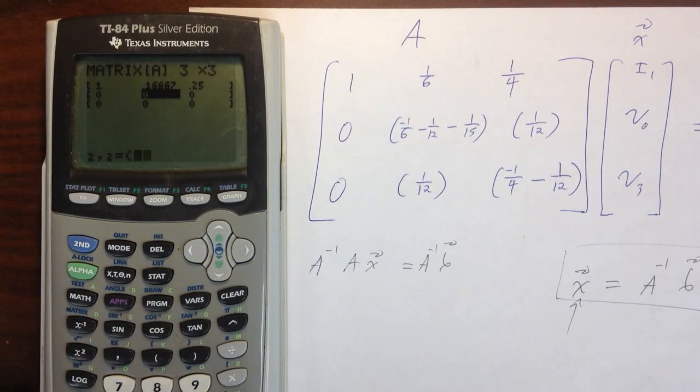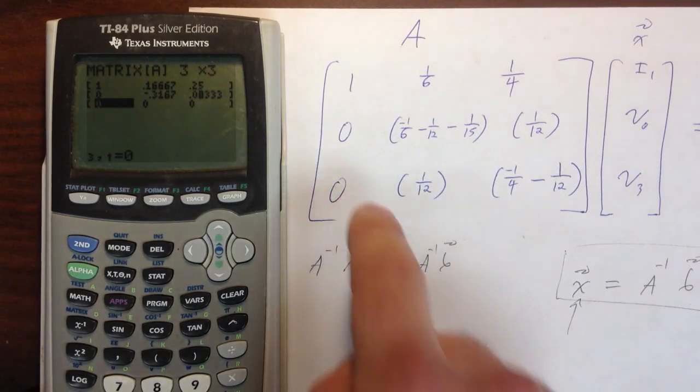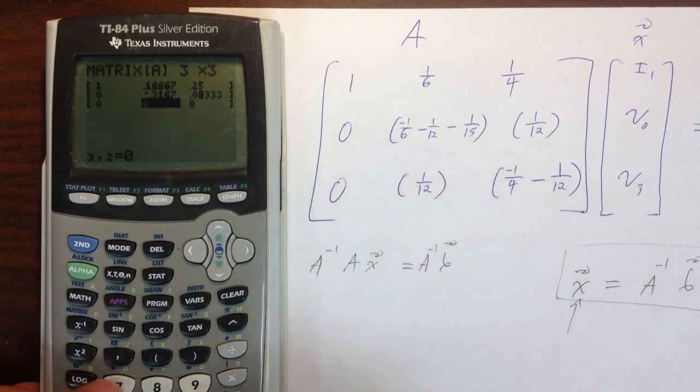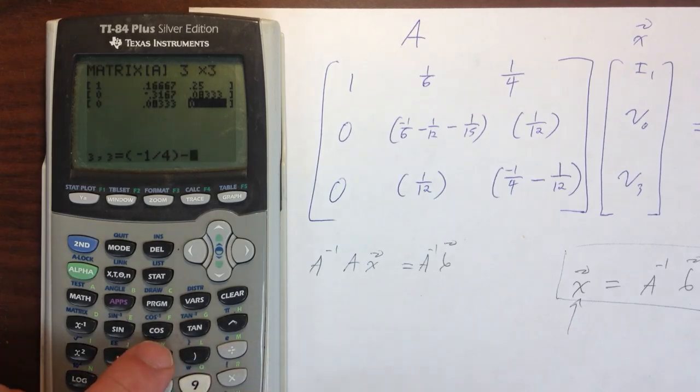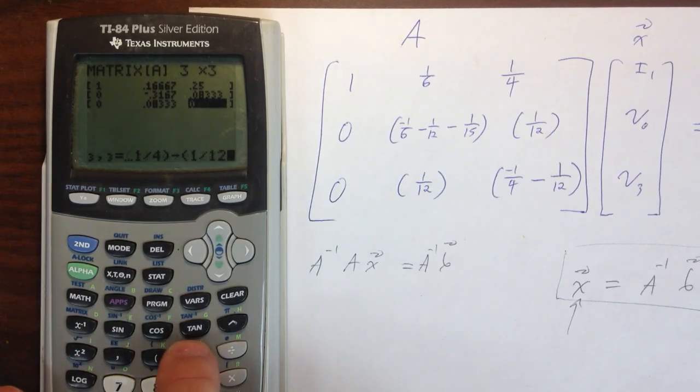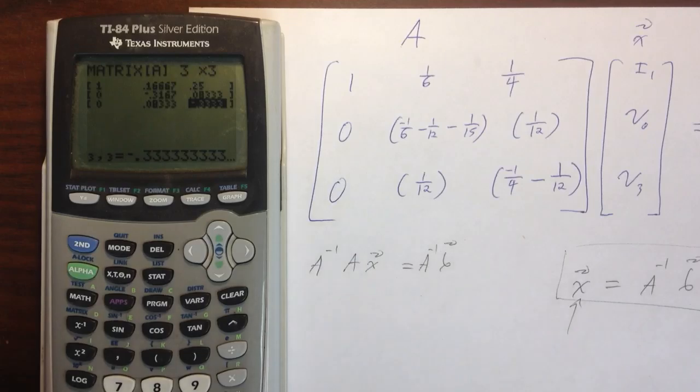Open paren, minus one over six, minus one over 12, close paren, minus one over 15, push enter. Now I'm at one over 12, one over 12. Down here I've got zero. Then I've got one over 12. And then finally I've got minus one over four, minus one over 12. That's pretty much it. I've got my A matrix completely into my calculator.